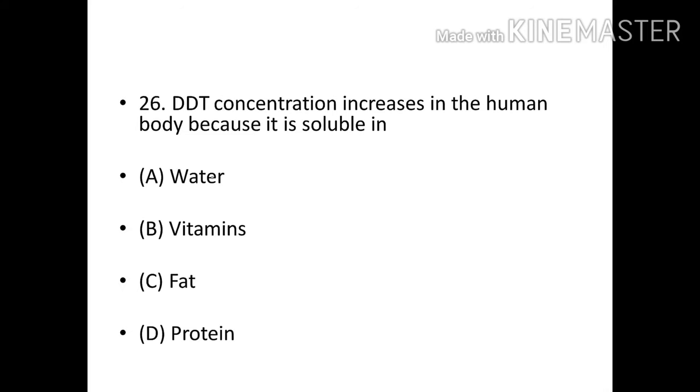DDT concentration increases in human body because it is soluble in? Options: Water, Vitamins, Fat, Protein. Correct answer: Option C, Fat.